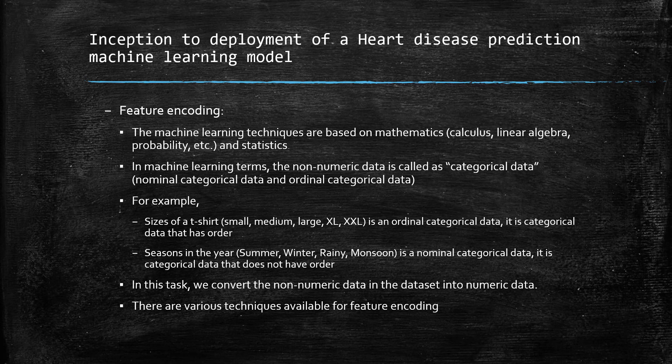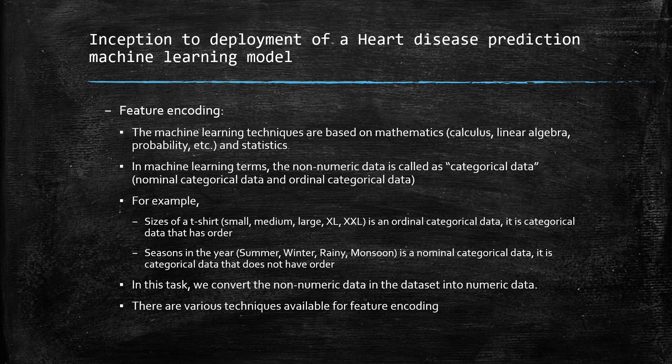Feature encoding: as we know, machine learning techniques are based on mathematics such as calculus, linear algebra, probability, and statistics. In machine learning terms, non-numerical data is called categorical data. It can be subdivided into nominal categorical data or ordinal categorical data. For example, t-shirt sizes like small, medium, large, XL, and XXL are ordinal categorical data, where there is a certain ordering among the categorical values.